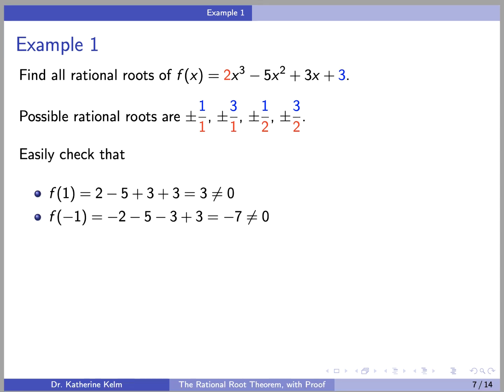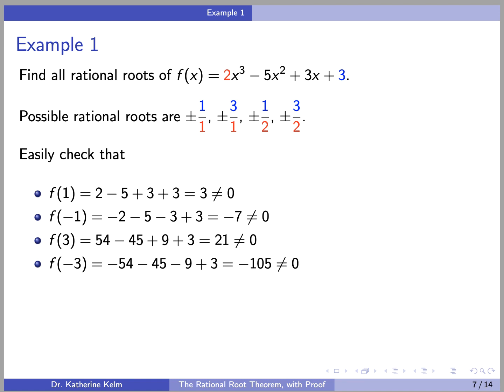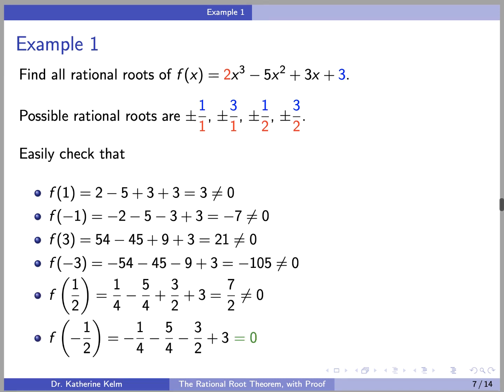The easiest one to check is 1, and we can verify that f(1) is not 0. Next easiest is probably negative 1; f(-1) is also not 0. Let's check the rest of the integers: f(3) is not 0, and f(-3) is also not 0. So now we come to ±½. f(½) is not 0, but f(-½) is 0. So we have a rational root: negative one-half.